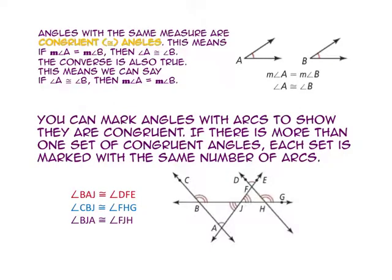Angles with the same measure are congruent angles. This is the symbol we use for congruent. If the measure of angle A equals the measure of angle B, then angle A is congruent to angle B — and the converse is also true. You can mark angles with arcs to show they are congruent. If there is more than one set of congruent angles, each set is marked with the same number of arcs.